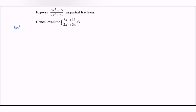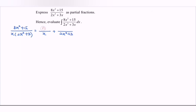We write the expression: 8x² plus 15 over — we can factor out the x — then we have 2x² plus 3. Notice that we cannot factorize 2x² plus 3. So we write out the basic partial fraction structure, where we have the linear factor plus the quadratic factor 2x² plus 3. The numerator over the linear factor will be a constant, and the numerator over the quadratic factor will be bx plus c, since the denominator is a quadratic factor.